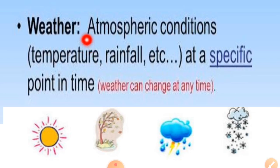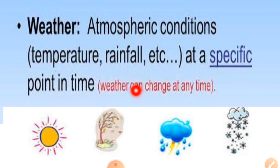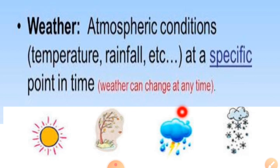Weather is the atmospheric conditions like temperature, rainfall, etc. at a specific point in time, and weather can change at any time. We can define it as the day-to-day condition of the atmosphere at a place with respect to temperature, humidity, rainfall, wind speed, and so on. This is called the weather of a place.